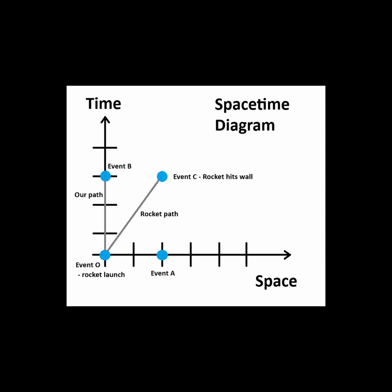The vertical line from event A to event C shows the rocket and the wall are the same location in space, and their separation is the time from the rocket launch to the impact. The horizontal line shows the rocket impact at C and relative to us at B at the same time. The separation of B and C shows the distance from us and the point of impact at the wall.